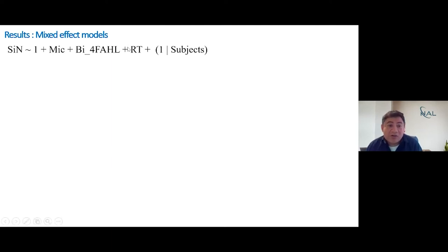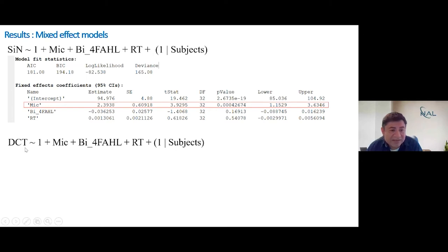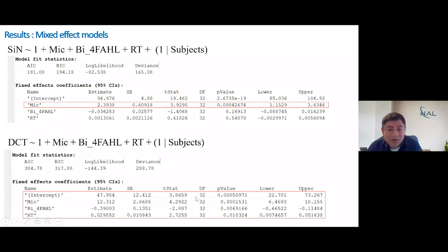To understand the relationship between intelligibility and DCT performance in a different way, I put together a mixed effects model. The model relates intelligibility performance against the type of microphone — Pinna Omni versus beamformer — as well as the hearing loss profile and reaction time, using subject as a random variable to make the model more robust. This model shows the microphone has a significant effect on scores. I did the same for the DCT test using the same model and parameters.